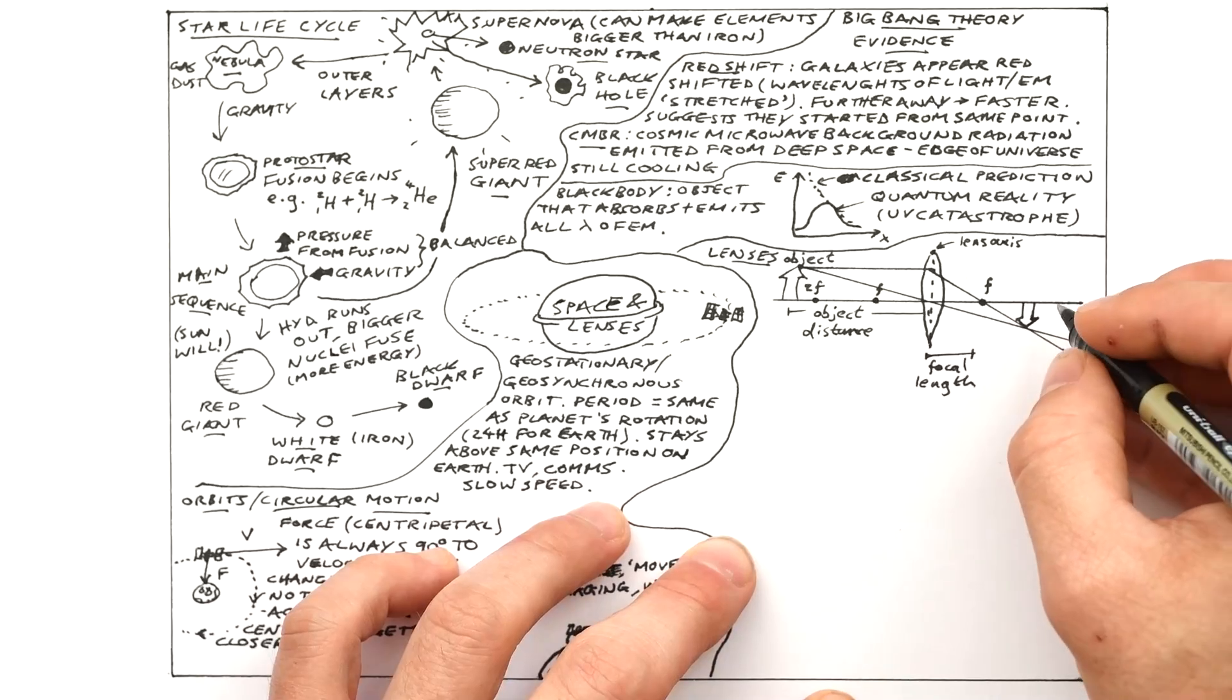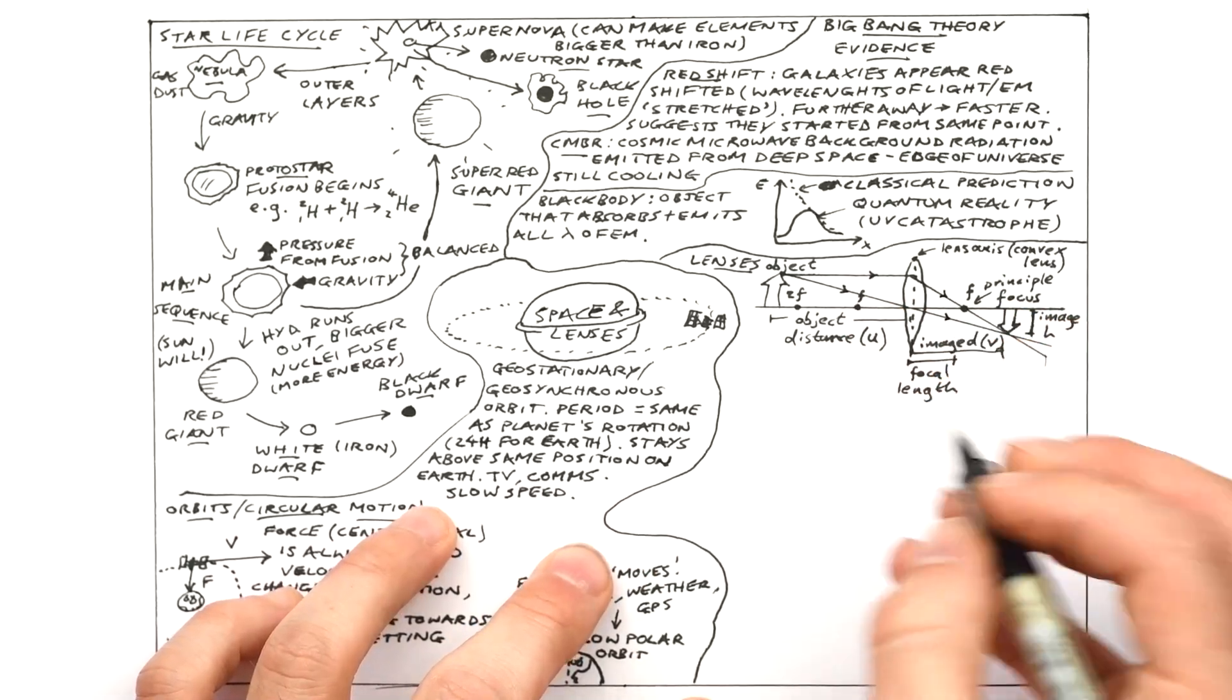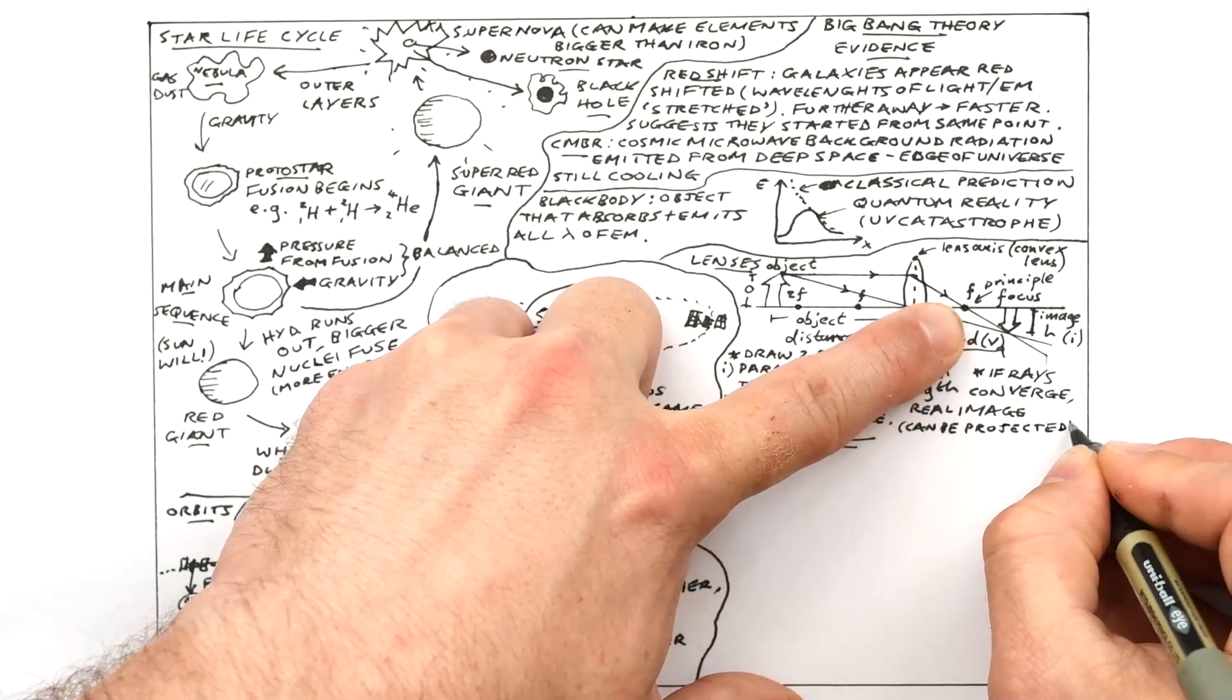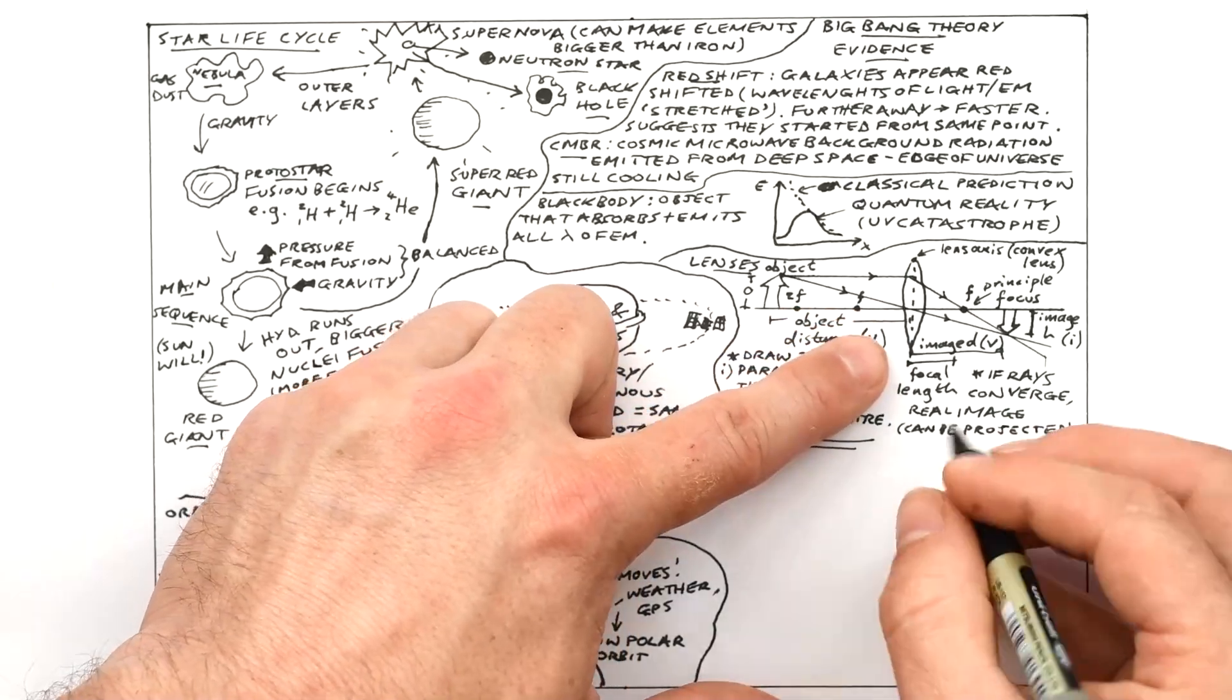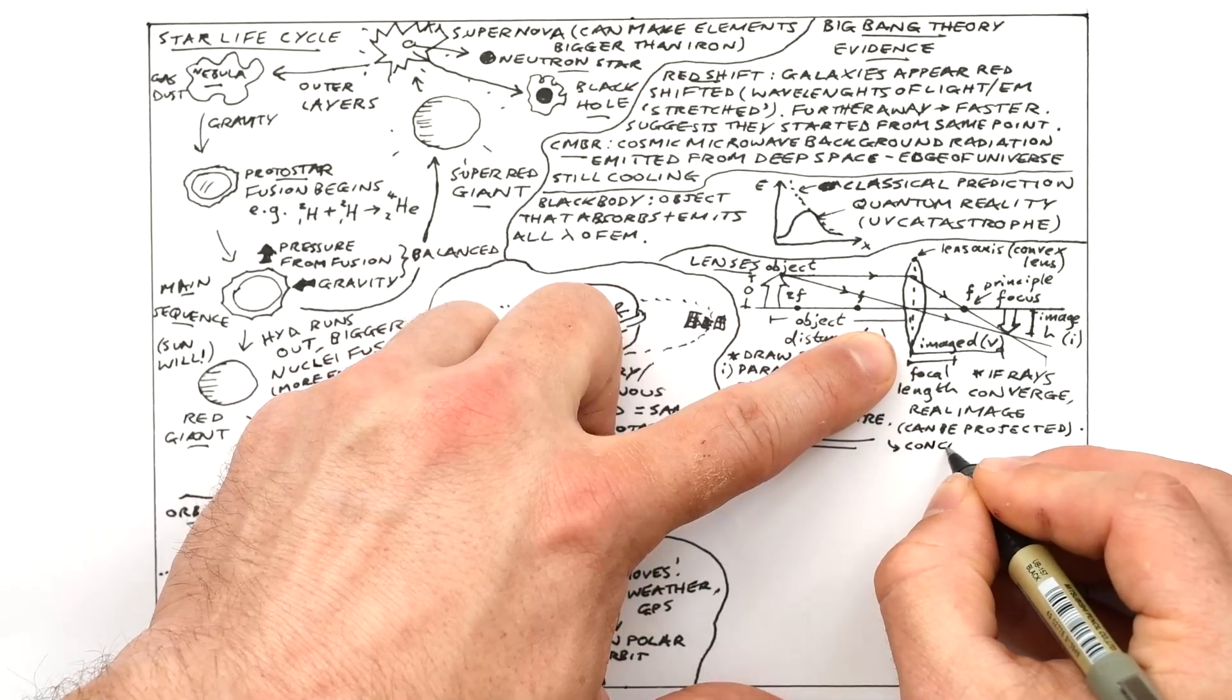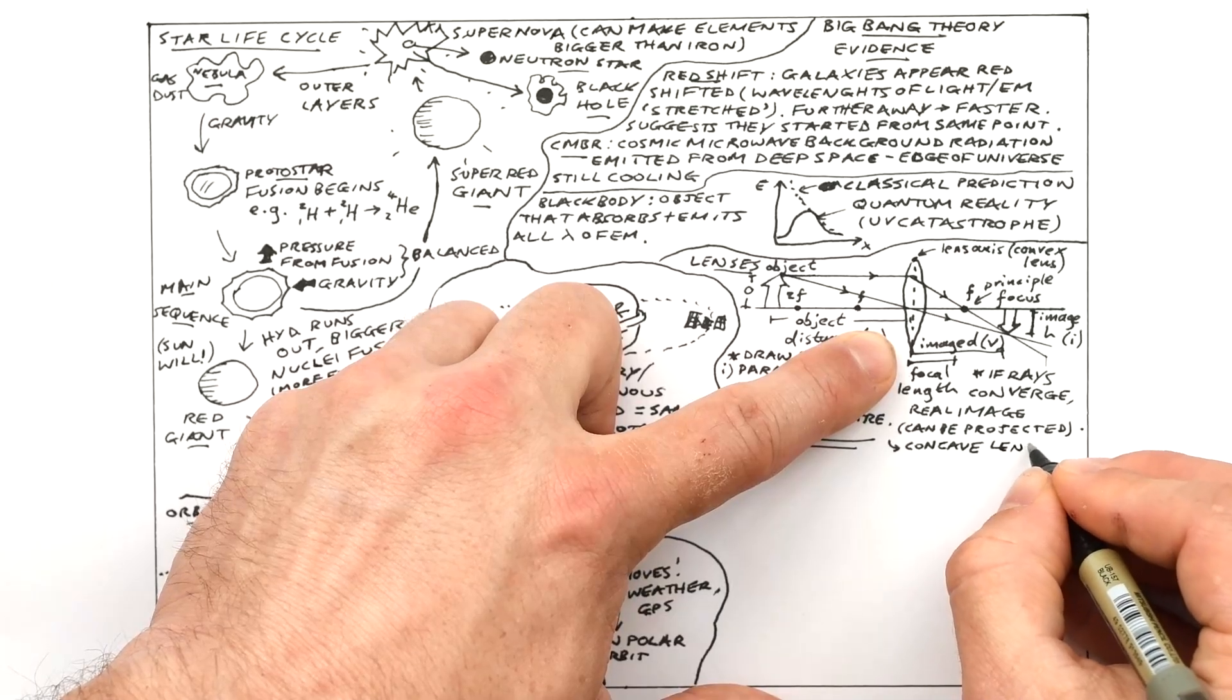Usually you'll see an object represented by just an arrow because you can see which way up it is. Now we have the object distance, the object height, and the image distance and image height as well. And we can see that these rays are actually converging. They're meeting. So that means that we can project this image. If we put a screen at this point where the image is then we can see the image of the arrow. So we call this a real image because it can be projected.